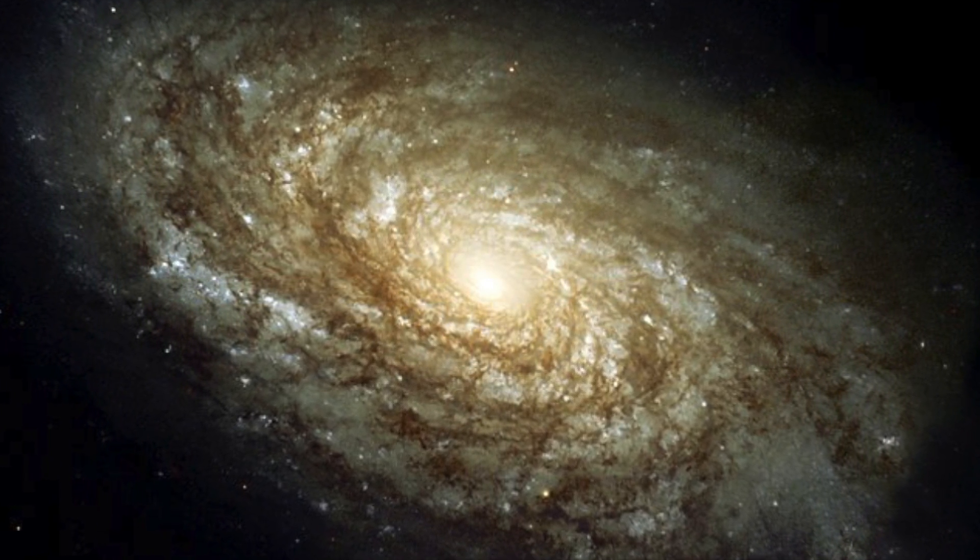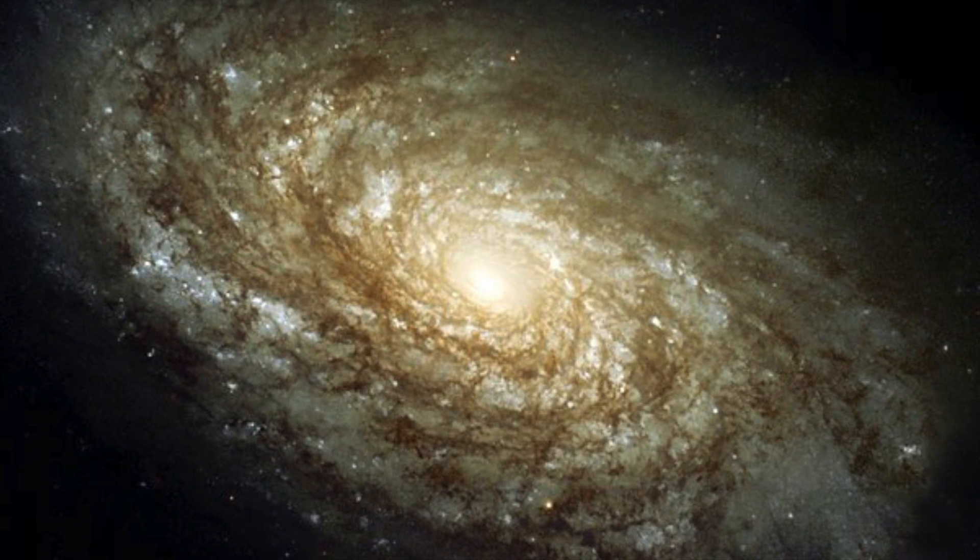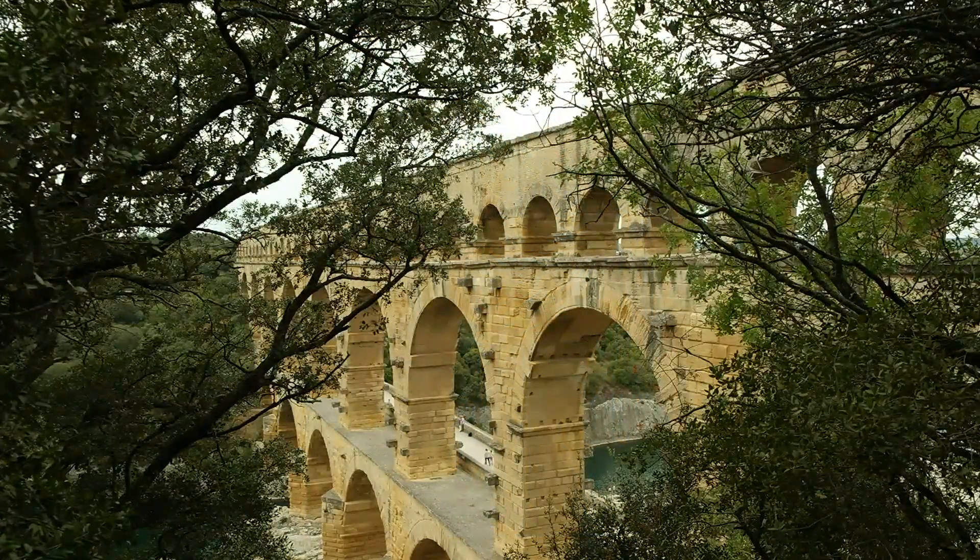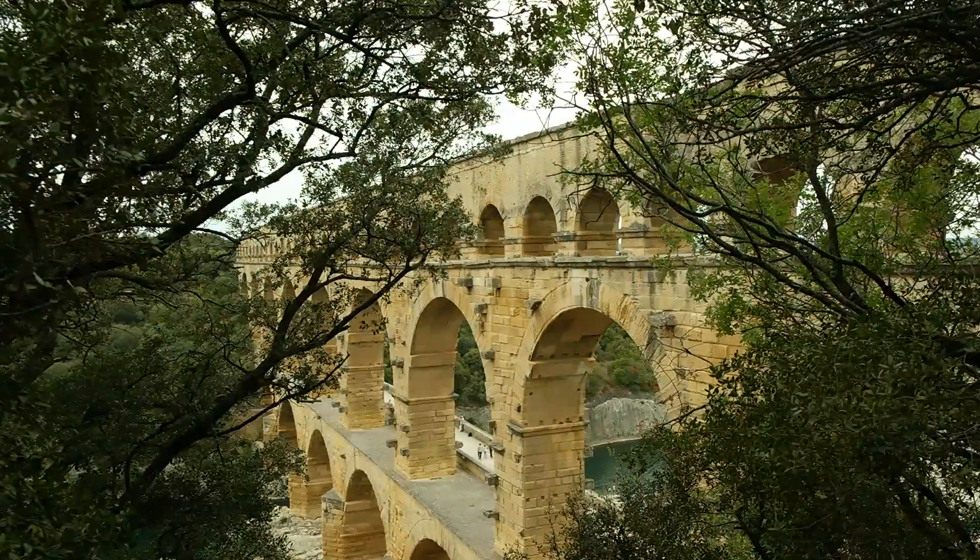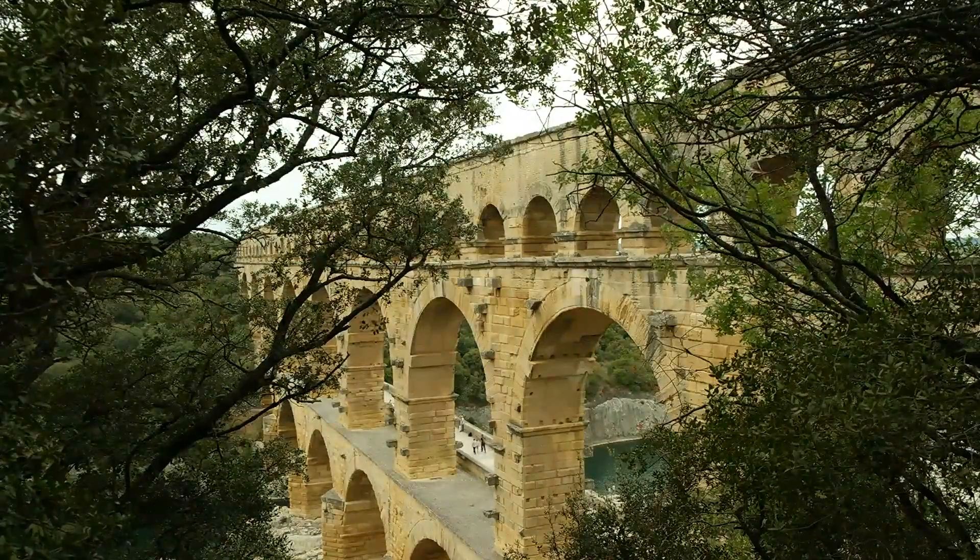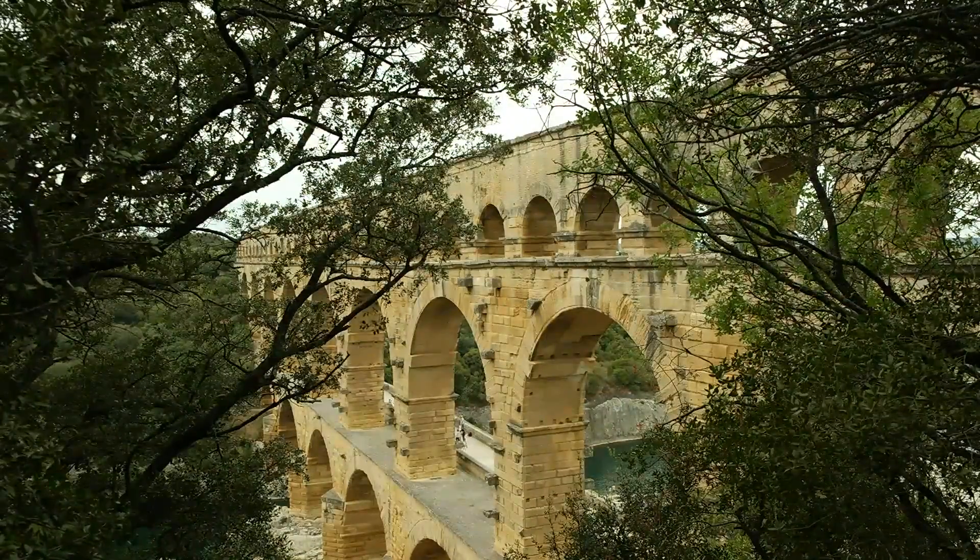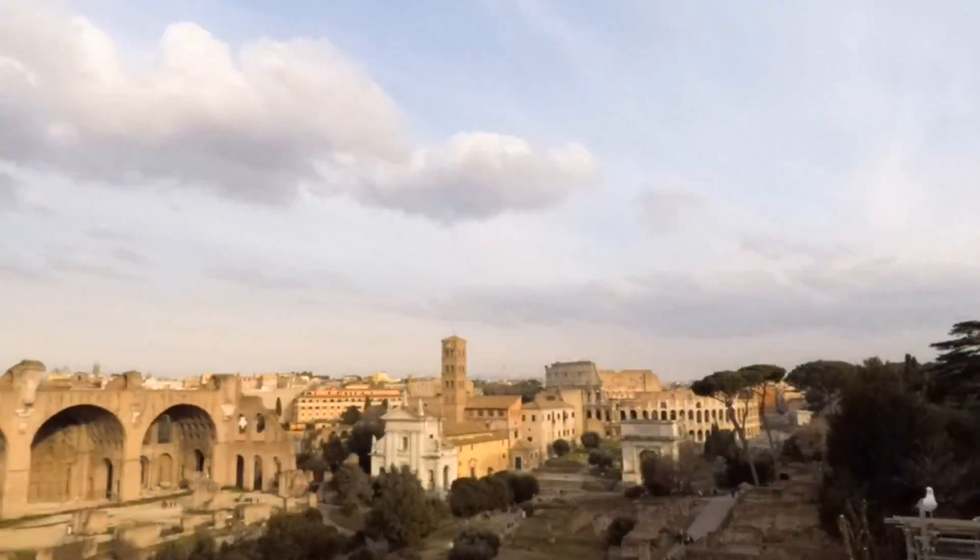As an example, take the Roman Empire. Hallmarking it in history was their expansion during the Republic and the early empire. But by the second century AD it was becoming increasingly clear to the Romans that further expansion was either impossible or not worth it, leading emperors like Hadrian to adopt policies of defense before conquest. Eventually, governing even what they had became an unwieldy affair, necessitating a reorganization of the government under two co-emperors, one in the east at Constantinople and one in the west based in Rome.